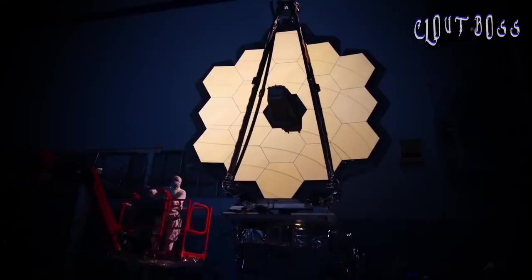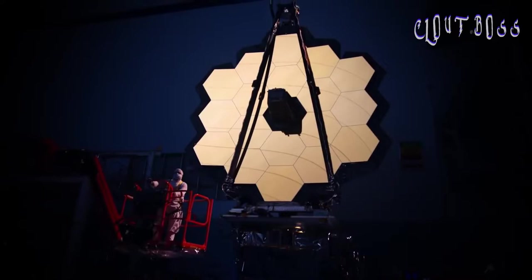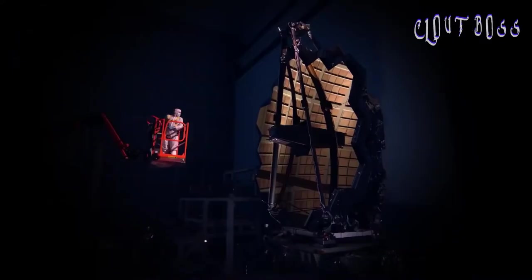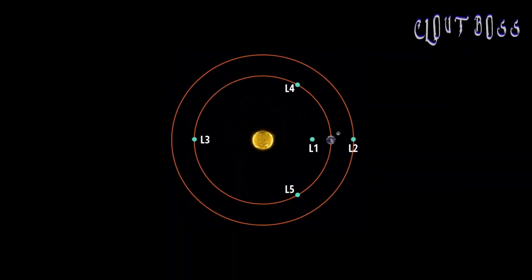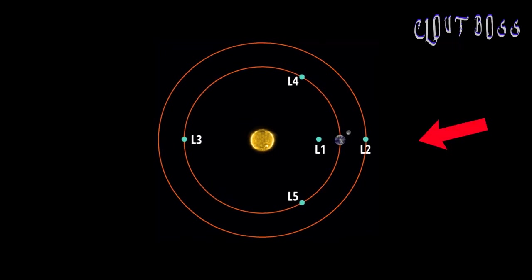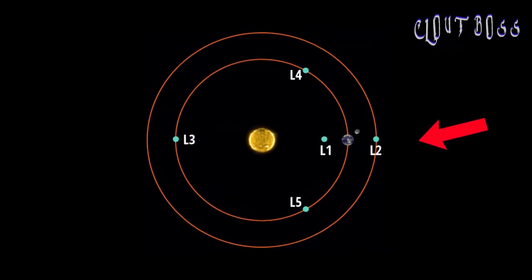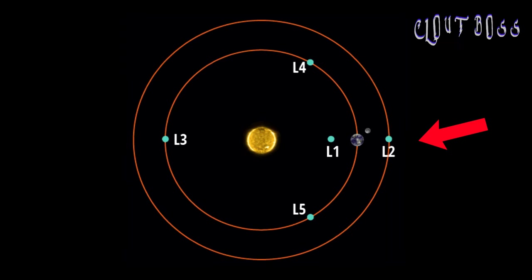Everything about the JWST was complex, yet the team launching it had only one shot at getting it right. This was because it would be situated where it was impossible to send a repair mission one million miles away from the Earth at a place known as the Lagrange 2 Point.